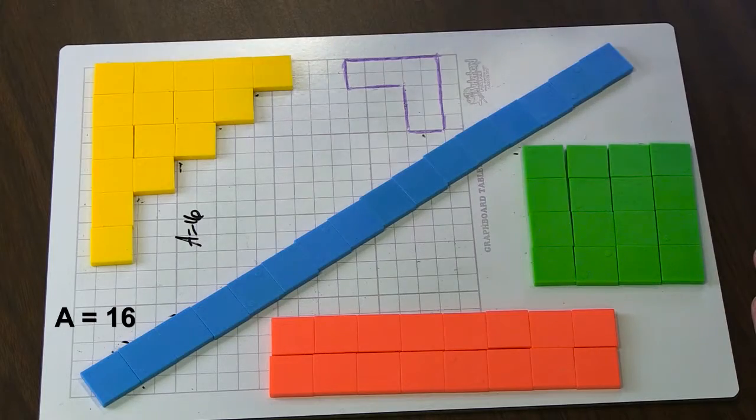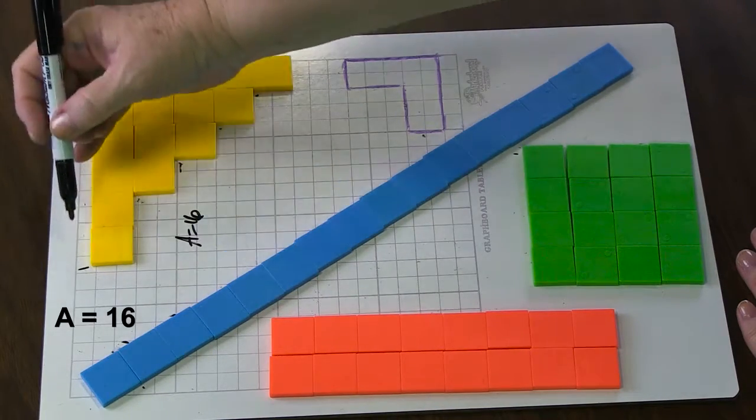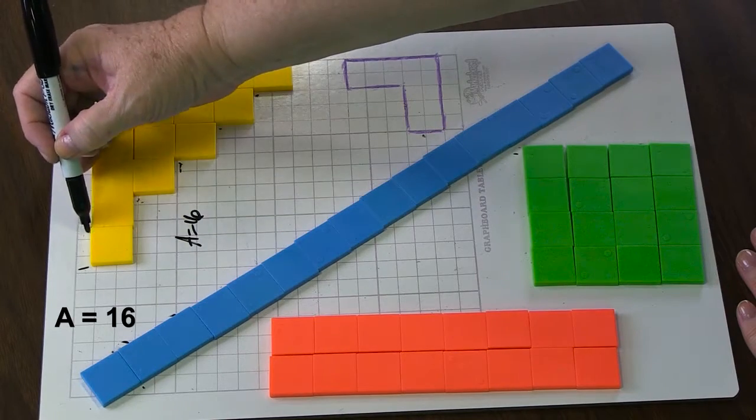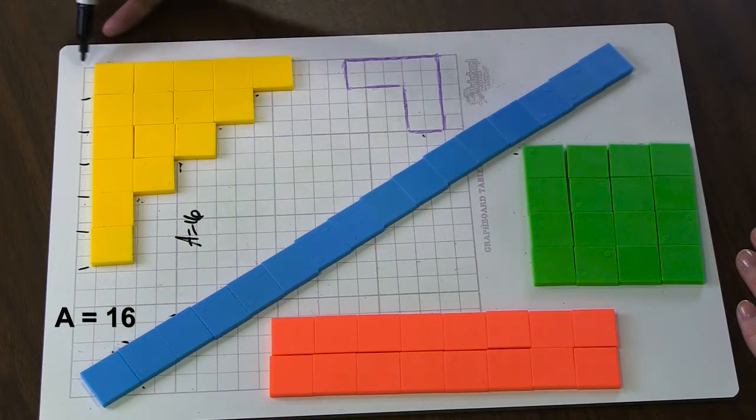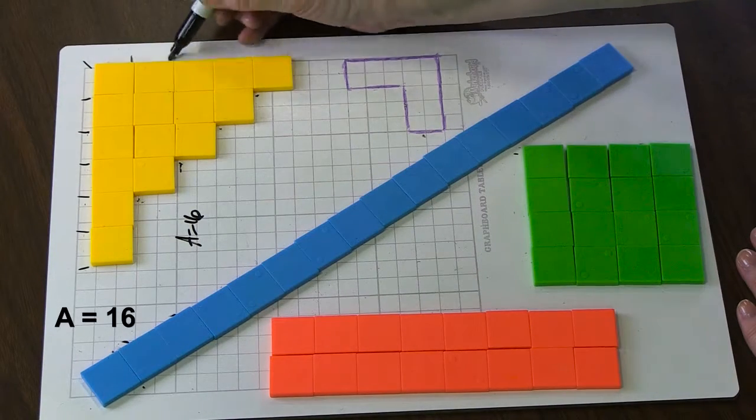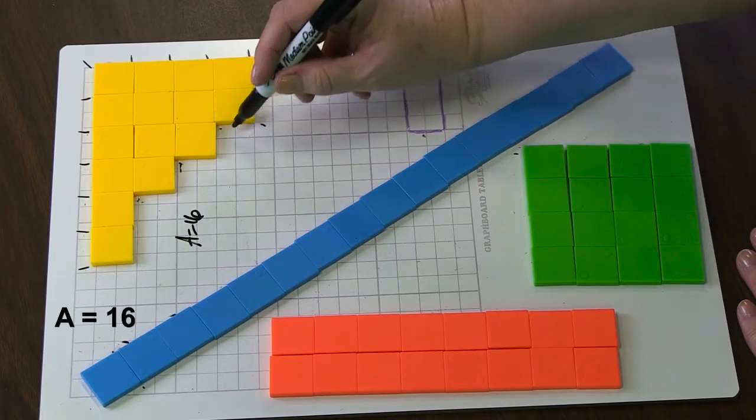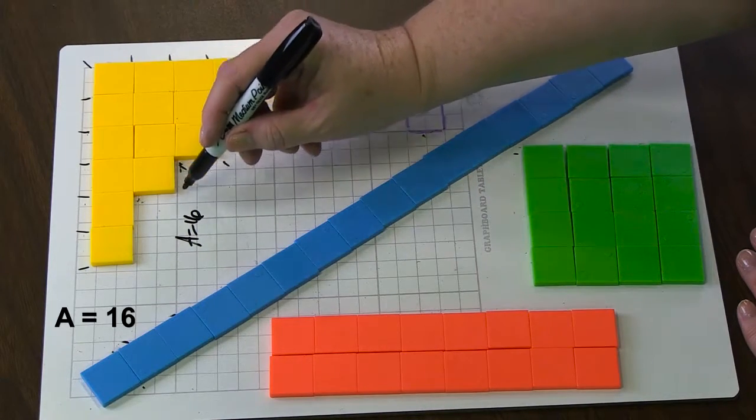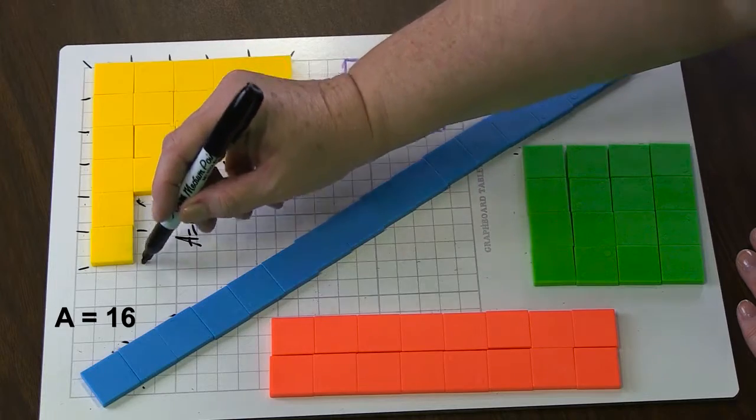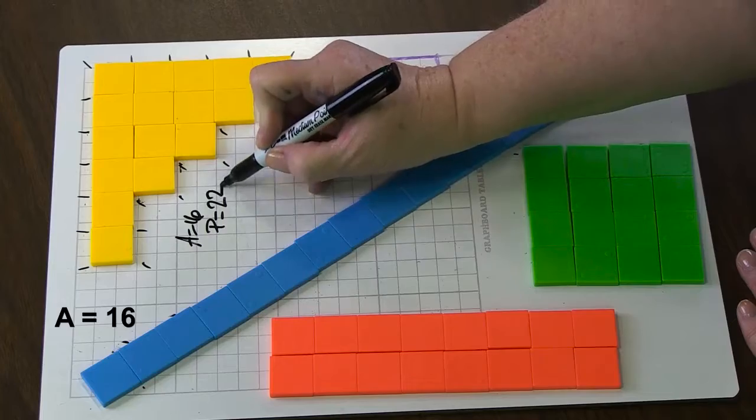Remember in earlier lessons they counted around and they might make tick marks to help them remember their count. Starting with the first unit, counting around and not forgetting the corners, we count 1, 2, 3, 4, 5, 6, 7, 8, 9, 10, 11, 12, 13, 14, 15, 16, 17, 18, 19, 20, 21, and 22. So the yellow shape has a perimeter of 22.